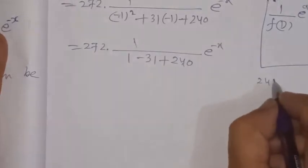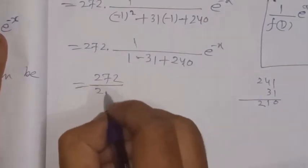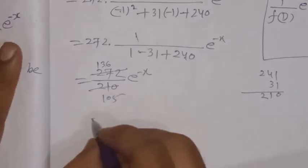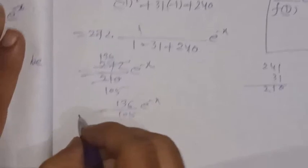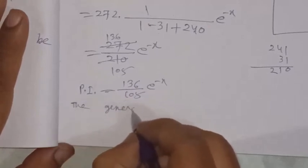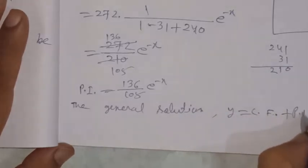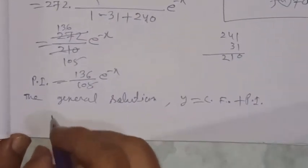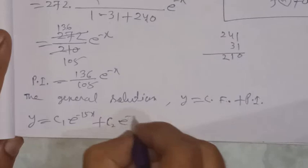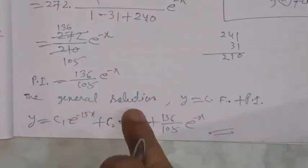Adding 1 and 240 gives 241, then subtracting 31 gives 210. So PI = 272/210 · e^(−x). Cancelling by 2: PI = 136/105 · e^(−x). This is the particular integral. The general solution is y = CF + PI, so: y = c1·e^(−15x) + c2·e^(−16x) + (136/105)·e^(−x).